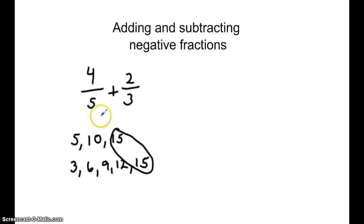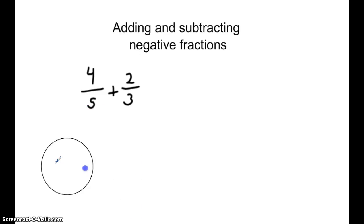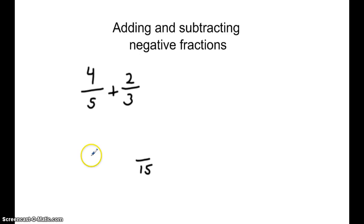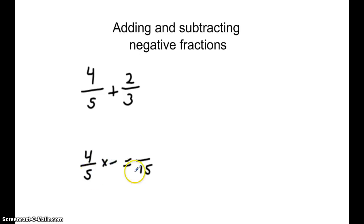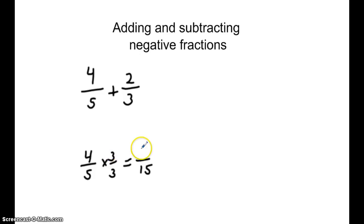So our common denominator will be 15. We're going to use 15 as the denominator. If we have 4 fifths, we need to find an equivalent fraction — what number multiplied by 5 will give a denominator of 15. Well, 5 times 3 is 15. Whatever we do to the denominator, we do to the numerator, and 4 times 3 is 12.